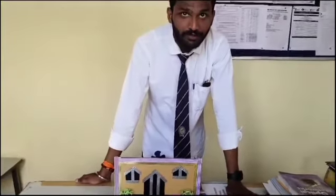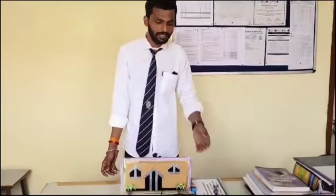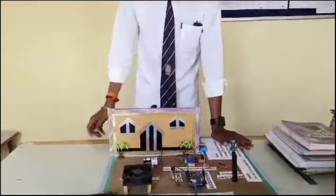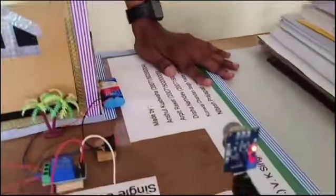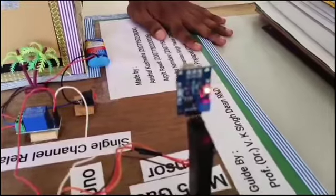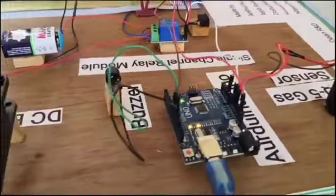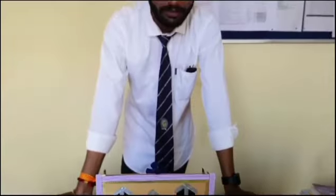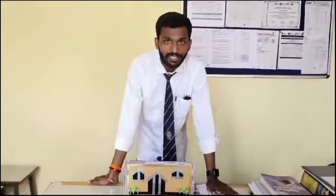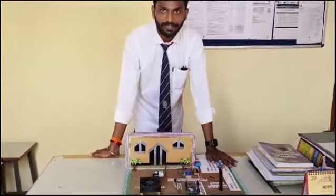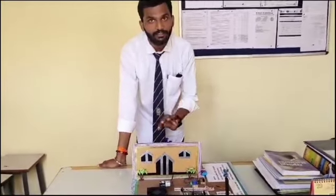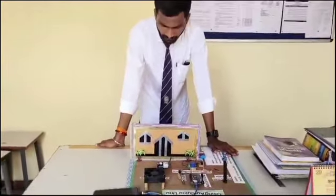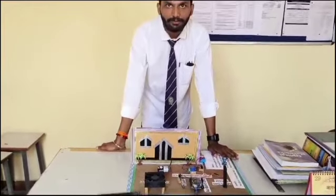Now talking about the buzzer: the positive terminal is connected to the Arduino. The LED indicates the signal through which we know about gas leakage, and then the motor — that is, the fan — is connected to the positive terminal of the battery. When leakage is detected in the house, automatically the light and the fan will turn off. For the relay, the positive terminal of the battery is normally open and the negative is grounded.